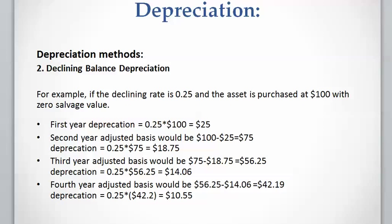Let's work on an example to see how declining balance depreciation works. We assume the declining rate is 25% and the asset is purchased at $100 with no salvage value. The residual book value for year one equals $100 minus salvage value of zero, giving $100. Depreciation for year one is 25% × $100 = $25. For year two, the adjusted base is $100 − $25 = $75, and depreciation is 25% × $75 = $18.75.